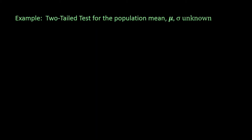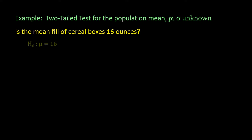Let's see how we would conduct a two-tailed test about the population mean for sigma unknown. Suppose we want to know if the mean fill in a box of cereal is truly 16 ounces. If the process is working properly, then there should be 16 ounces on average in each cereal box. The null hypothesis would be stated as: H₀: mu is equal to 16 ounces. The alternative hypothesis is counter to the null: Hₐ: mu is not equal to 16 ounces.